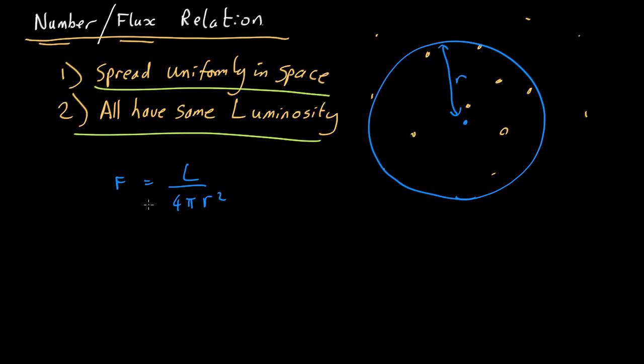What this means is that if we see an object, its distance is going to be proportional to flux to the minus a half by rearranging that.